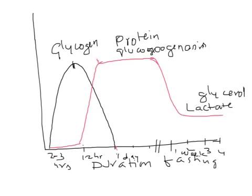The ATPs for gluconeogenesis in the liver come from fatty acid oxidation. At two to three hours of fasting, glucagon activates hormone-sensitive lipase, which causes lipolysis of triacylglycerol in adipose tissue. Fatty acids are brought to the liver and undergo beta oxidation, producing acetyl-CoA. Acetyl-CoA enters the TCA cycle, generating NADH and FADH2, which enter the electron transport chain and produce ATPs used to drive gluconeogenesis.